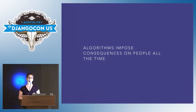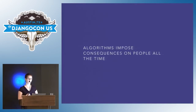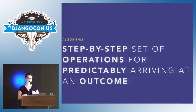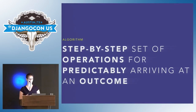Algorithms impose consequences on people all the time. We're able to extract such remarkably precise insights about any individual. But we haven't really asked ourselves enough: do we have a right to know what they didn't consent to share with us, even when they willingly share other data that ends up leading us there? And we have to be asking ourselves more about how do we mitigate against unintended consequences of that. So it's helpful to step back a little and start with asking just a really basic question: what is an algorithm?